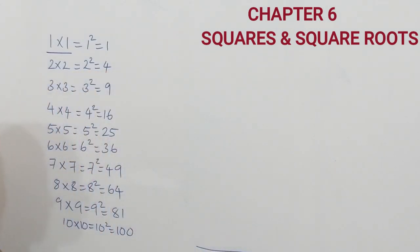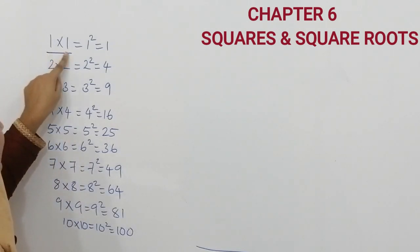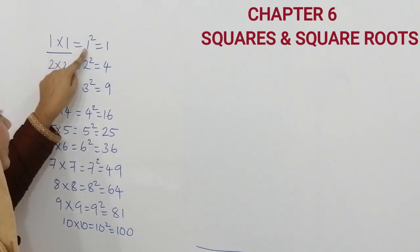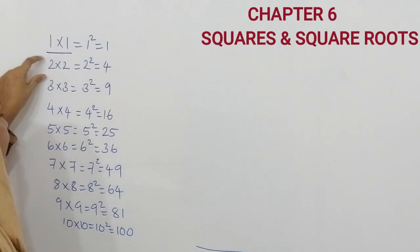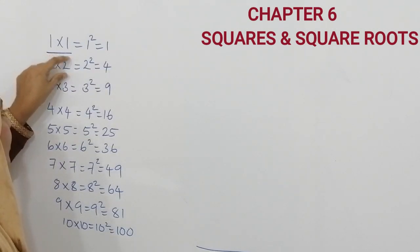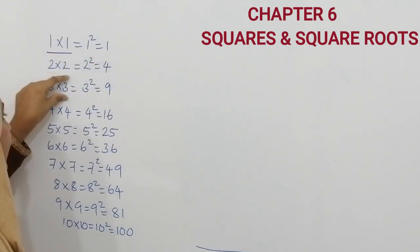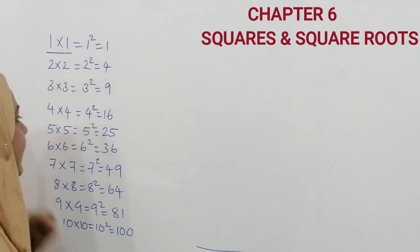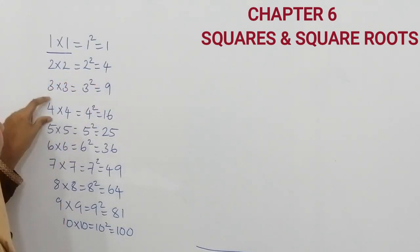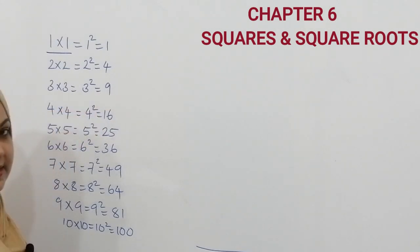This is the square table of 1 to 10. 1 ones are 1, so square of 1 is 1. 2 into 2, 2 squared is 4. 3 multiplied by 3, you will get 3 squared, that is 9. 4 multiplied by 4, that is 4 squared, 16, and so on.